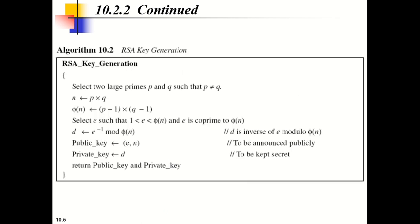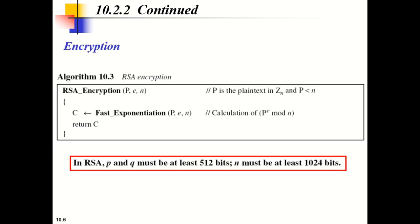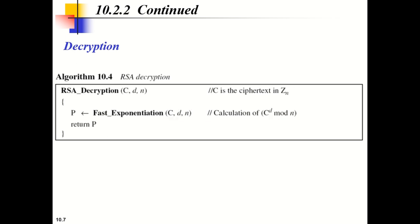The public key is represented as the combination (E, N) and the private key as (D, N). This is the pseudo code for key generation: choose two prime numbers, calculate N, then phi(N), then select E, then calculate D as the inverse of E. For encryption, we use the plaintext and public key in the expression. For decryption, we use the ciphertext and the private key.